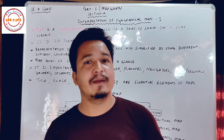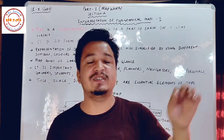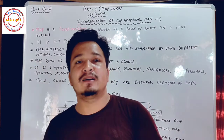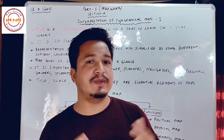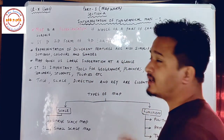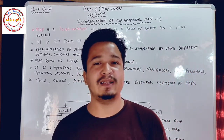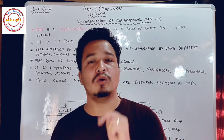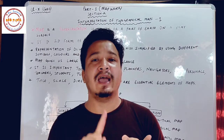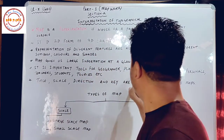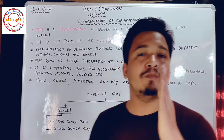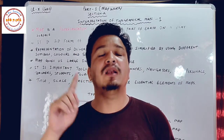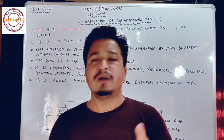Navigators — that is, sailors who sail on the seas and oceans — have two essential pieces of equipment: a compass, which shows direction, and a map. With the help of maps, navigators carry out their voyages and journeys across seas and oceans.